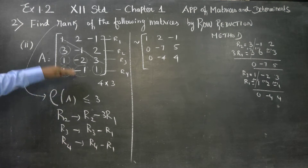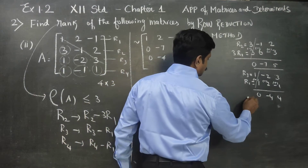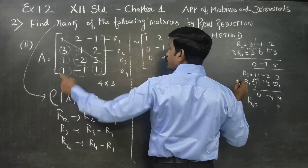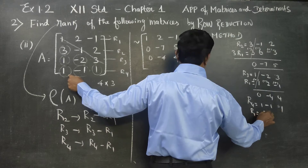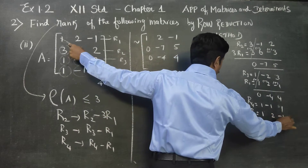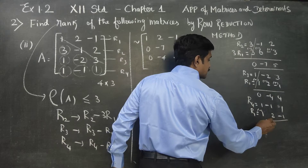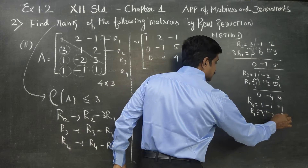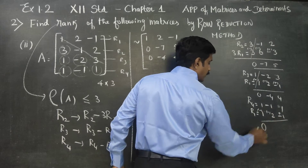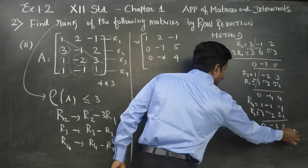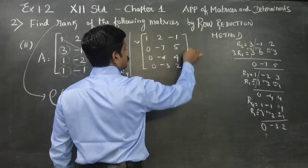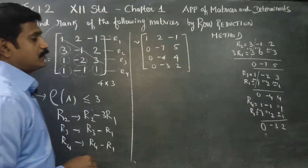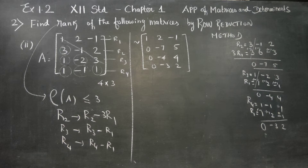R4 minus R1: what is my R4? 1, minus 1, 1. What is R1? 1, 2, minus 1. Subtraction: now this is 0; now this is minus 3; now this is 2. So R4 result: 0, minus 3, 2. Now this is 3 zeros — we have to sum 3 zeros.